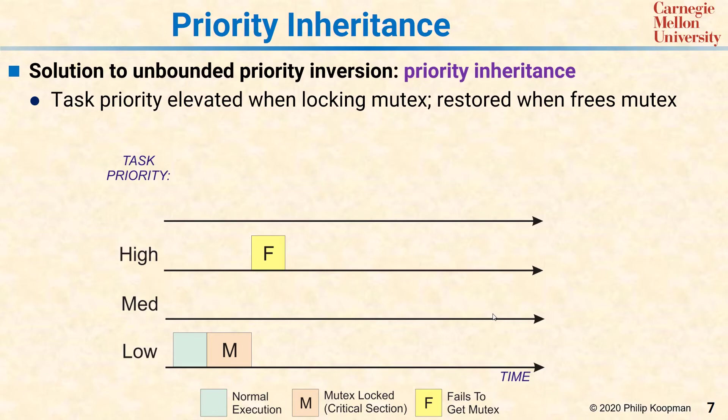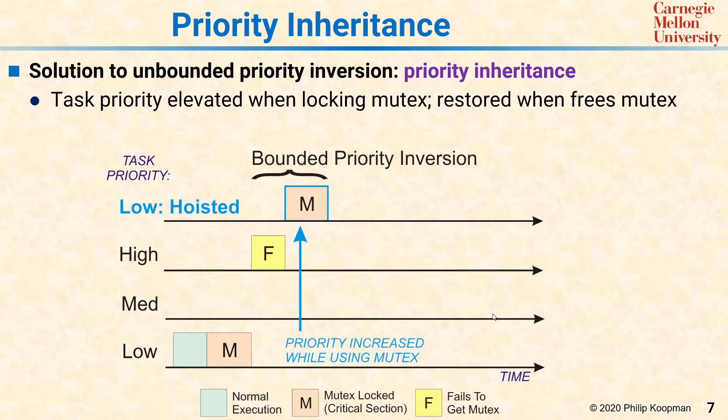In priority inheritance, what happens is as the high priority task fails to get the mutex, as a side effect, it hoists the priority of the low priority task. So basically the low priority task is inheriting the priority of the high priority task that wants the mutex.